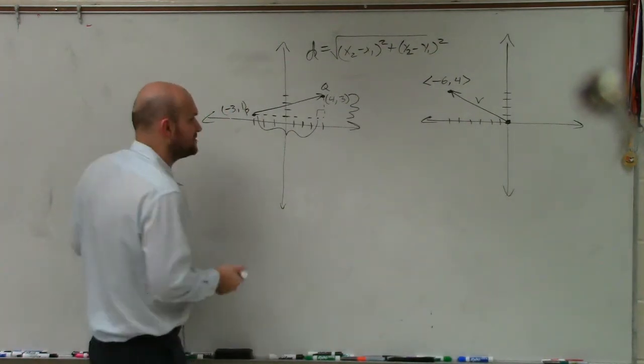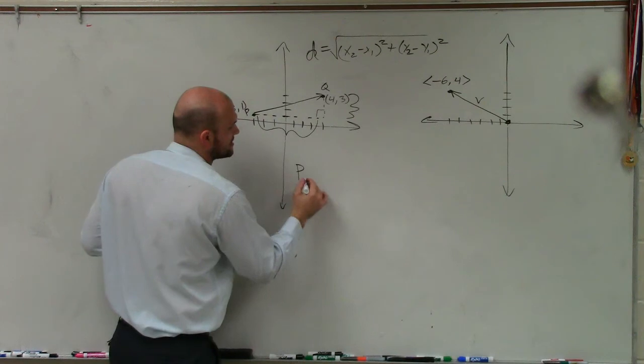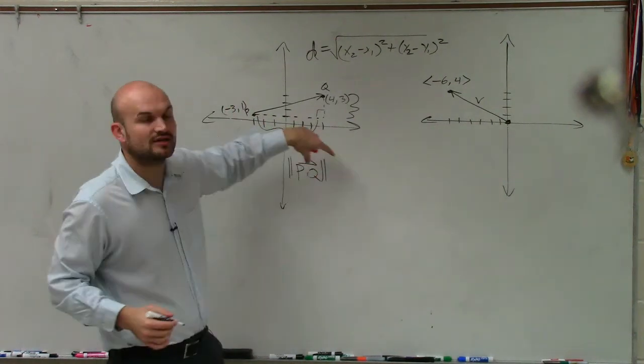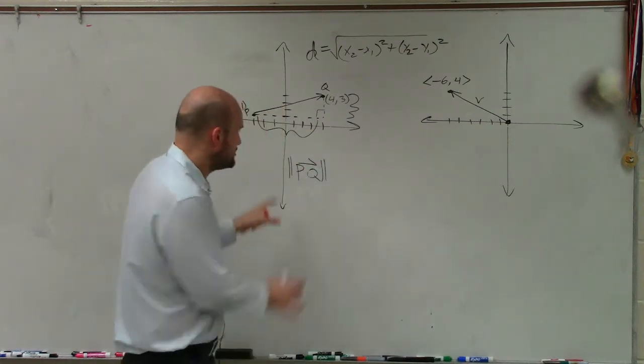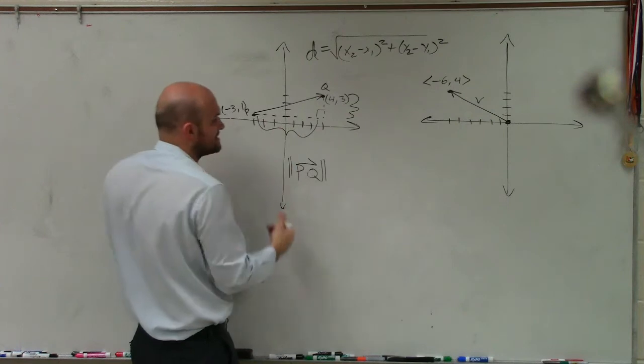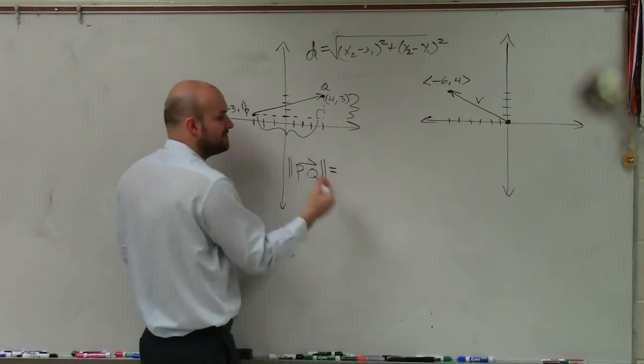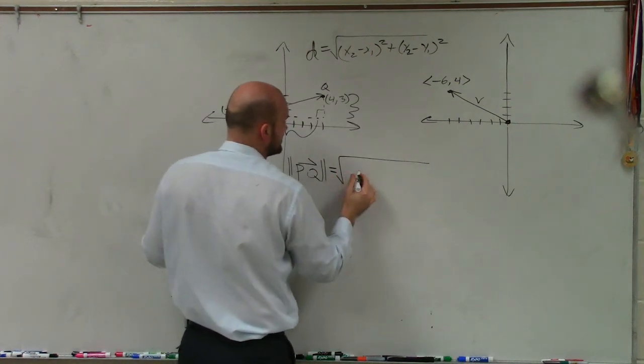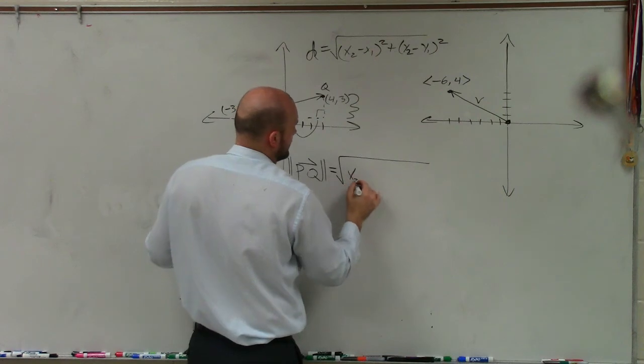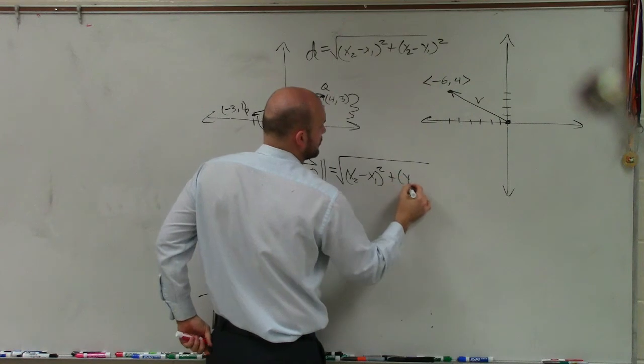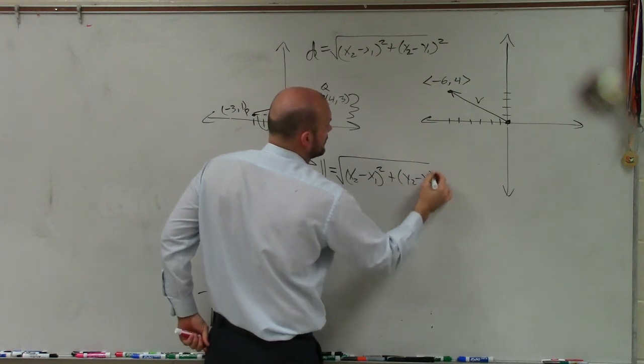For this, we're going to call this pq. And to represent magnitude for a vector, we use these double lines. So this represents the exact same thing as the distance formula, but it's represented for a vector, not a line segment. However, the definition is going to be exactly the same. It's just going to be x2 minus x1 squared plus y2 minus y1 squared.